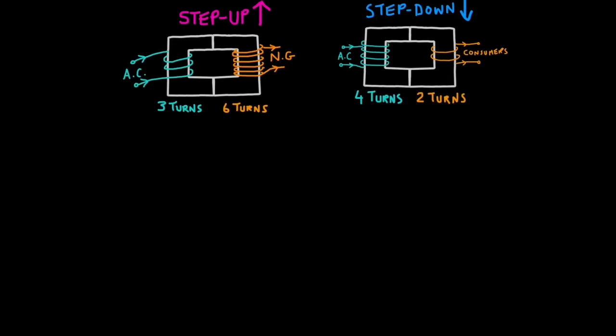Now, as you saw in the previous diagram of the national grid, there are two types of transformers. Step-up transformers and step-down transformers. The difference between them is very easy to understand. Well, firstly, step-up transformers boost voltage and step-down transformers reduce voltage. That's why you get these before the national grid, and that's why you get these after the national grid. But what makes something a step-up transformer is simple. You just need more turns in the secondary coil than the primary coil, so it steps up. Whereas in a step-down transformer, you have more turns in the primary coil and less in the secondary coil, so it steps down.